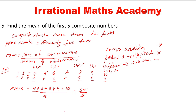Converting 37 by 5 into decimals gives 7.4. If you have doubts, you can comment in the comment section. All the best.